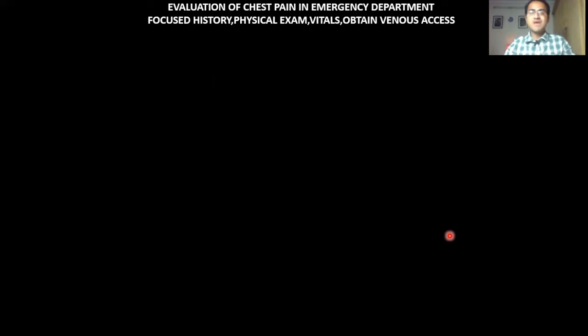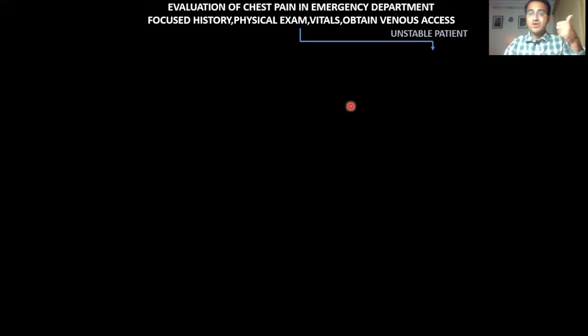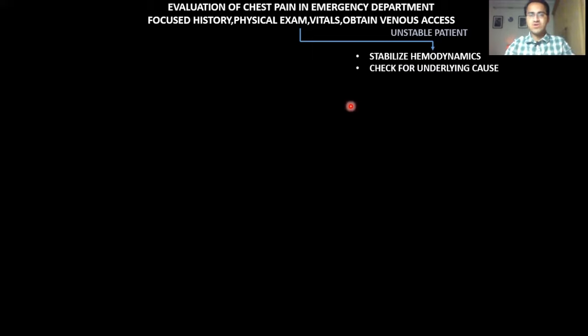Whenever a patient presents with chest pain, your level of suspicion for cardiac pathology should be high. Take a focused history, do a physical exam, check vitals, and obtain venous access. Then determine whether the patient is stable or unstable. If unstable, immediately stabilize his hemodynamics — if blood pressure is dropping or he is bradycardic, stabilize him first, then look for the underlying cause.